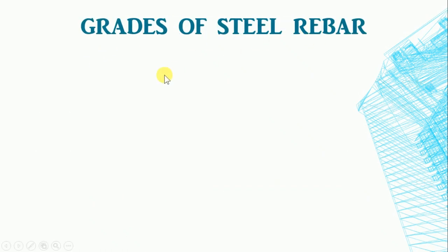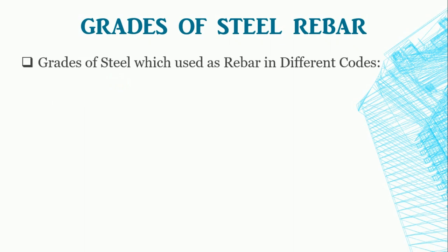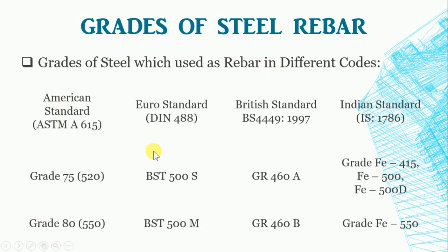Grades of Steel: Usually, rebars are made of steel. As steel has various grades, to achieve particular properties of steel, it is divided into the following grades. Different codes with respect to their countries have their own classification for the grade of steel. The following table shows the classification of grade with respect to the standard. Every code has their designation to classify the material. The numeric value shows the yield stress of a particular grade of steel in N/mm².